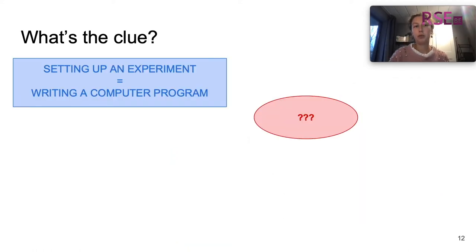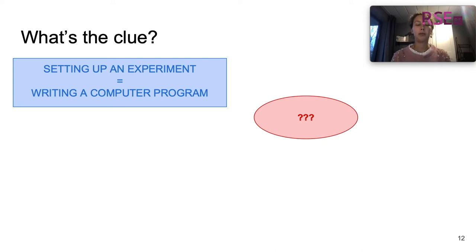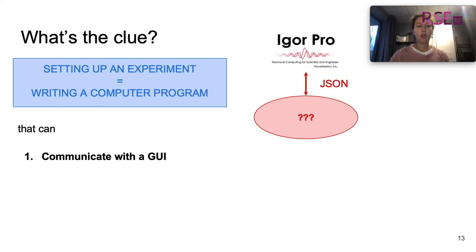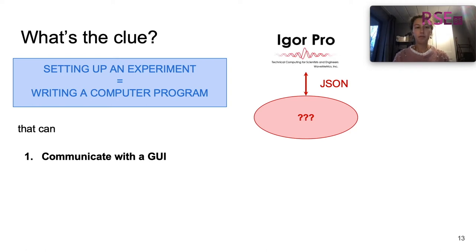So what's the solution? We realized that setting up an experiment in fluorescence microscopy is actually similar to writing a computer program. And this computer program should be able to do three things. First of all, it should be able to communicate with a graphical user interface, or GUI. This GUI is provided in igorPro, software that is often used in a biomedical or chemical setting for interpreting images or doing data acquisition. Communication with the GUI happens via serialized JSON objects via a socket.